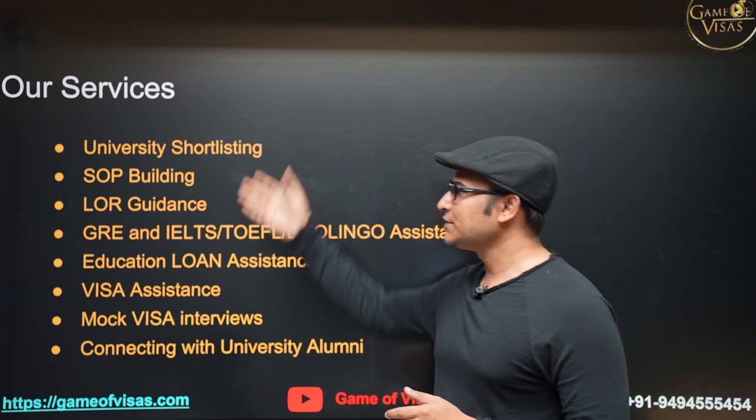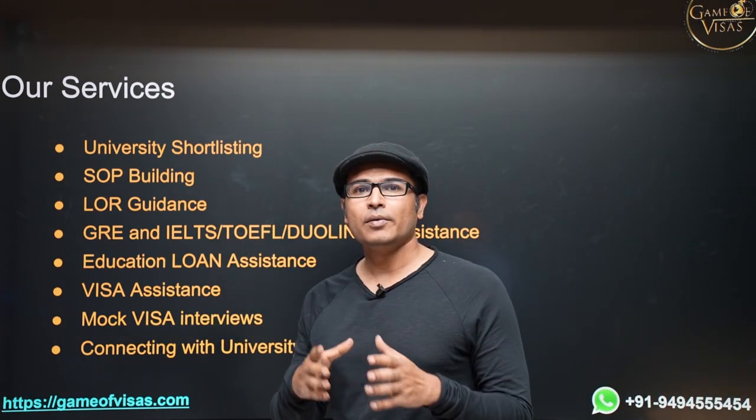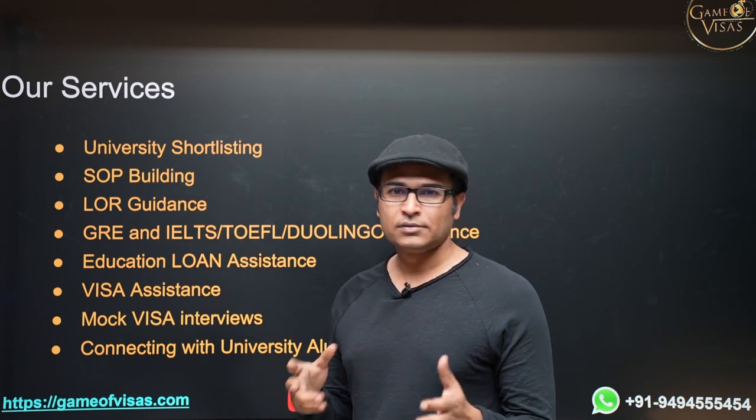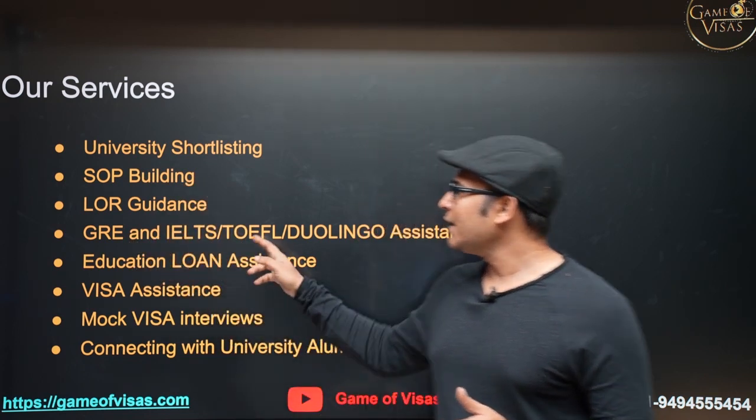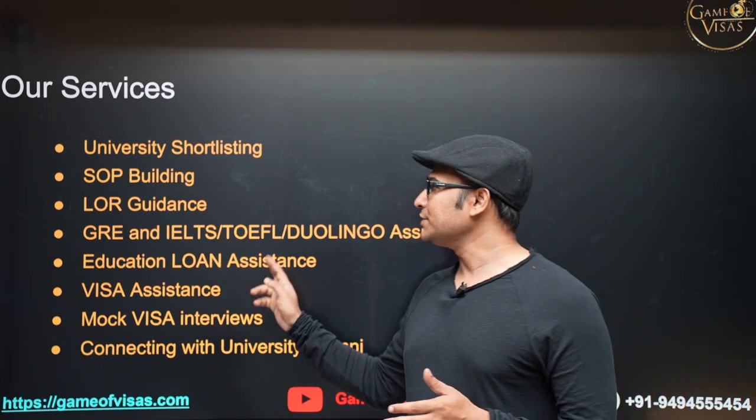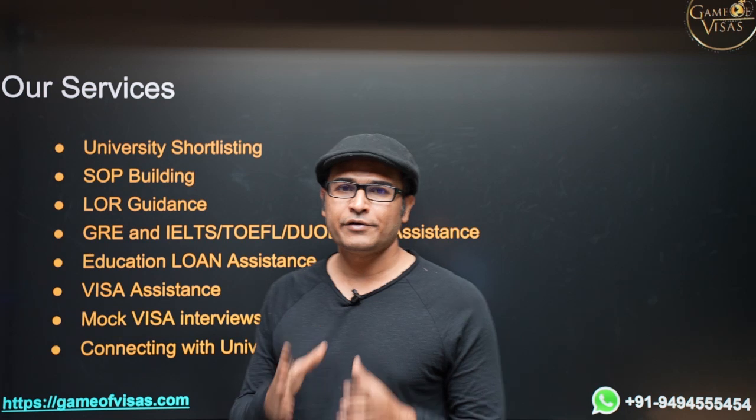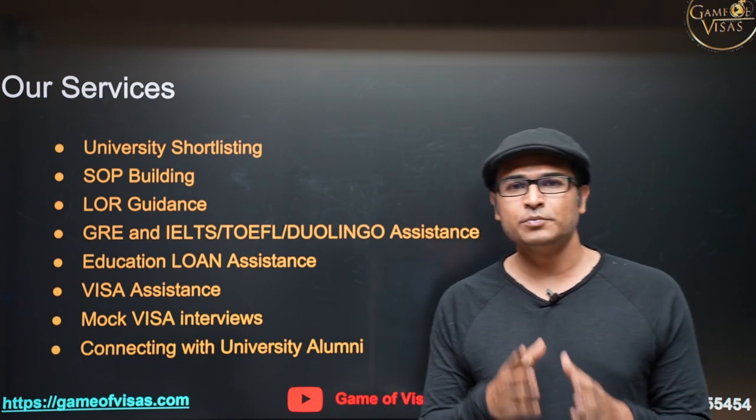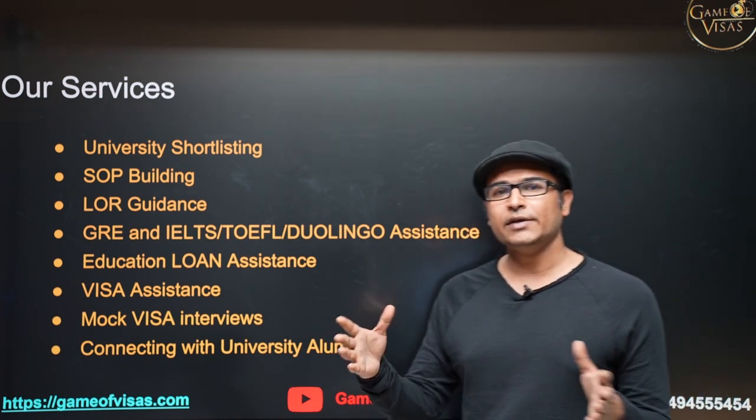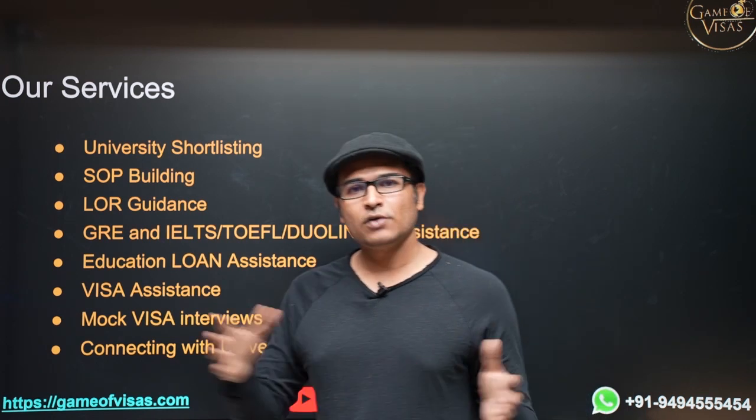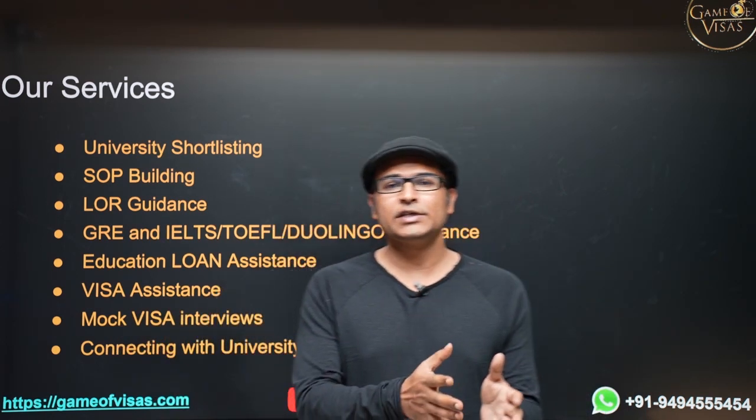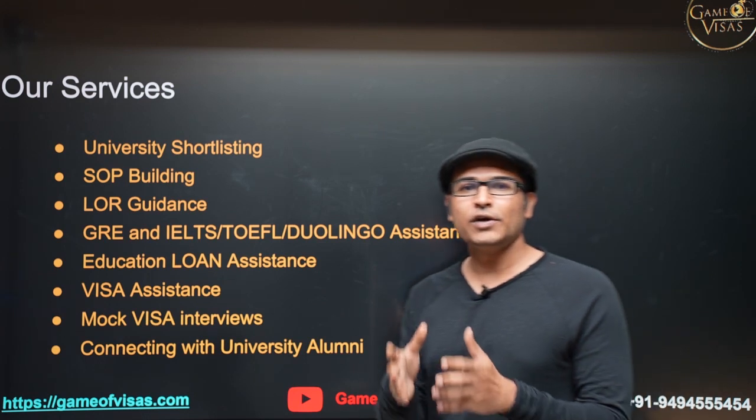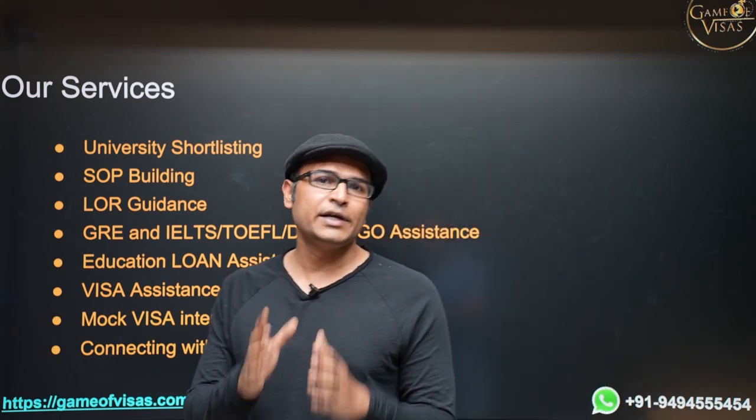These are all the services that we provide: university shortlisting depending on your profile, statement of purpose building, LOR guidance, GRE and English test assistance, and education loan assistance. You don't have to have any collateral - without any security, you can get education loan. Getting education loan is very simple these days. You have a range of universities - 10 lakh universities, 20 lakh universities, or 50 lakh universities. Whatever it is, you are going to get a complete education loan and you can pay off your education loan in one year after you get a job.